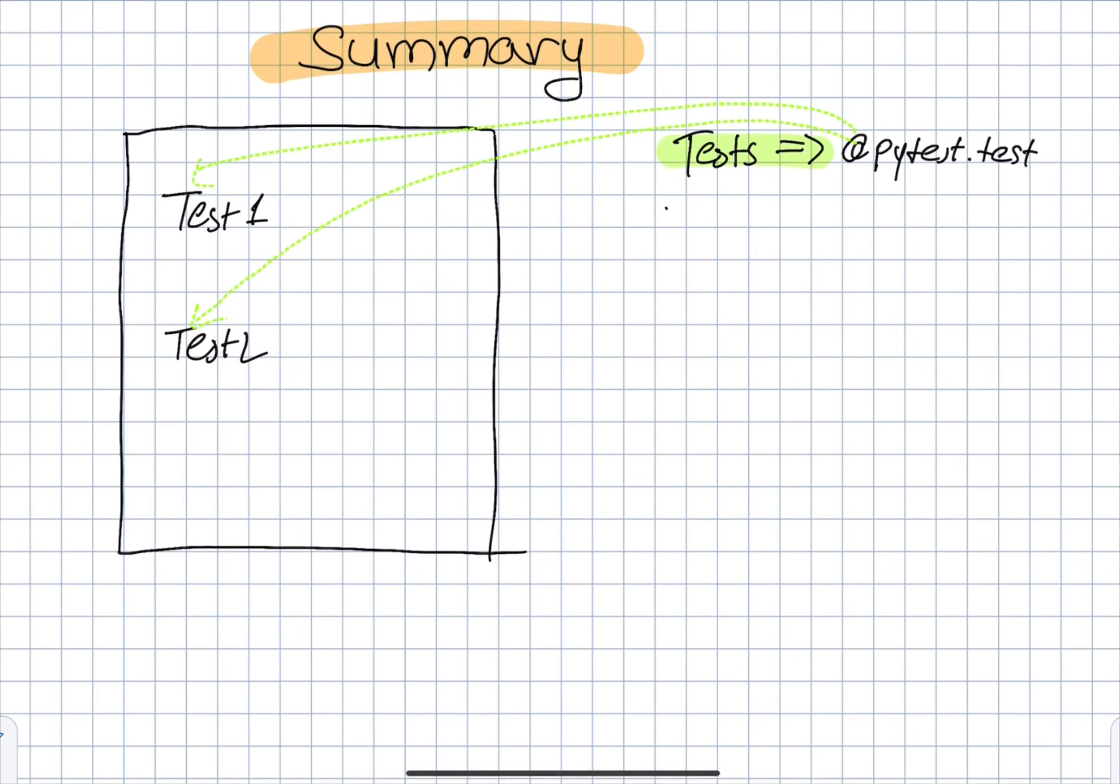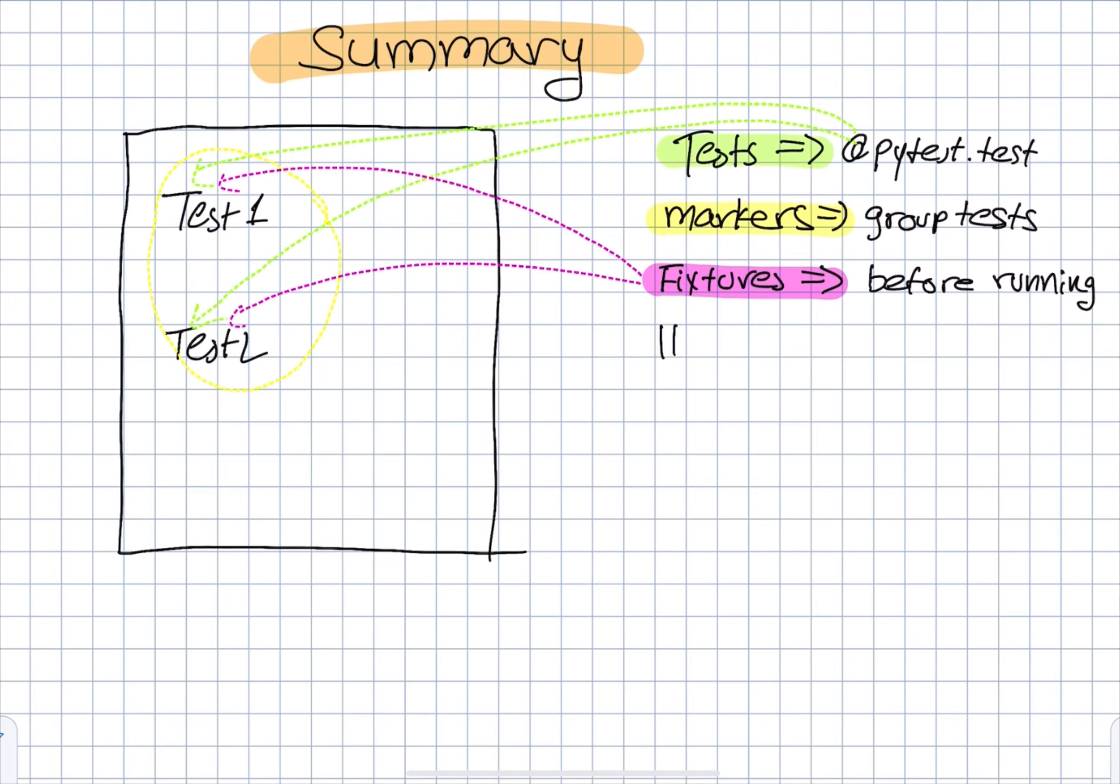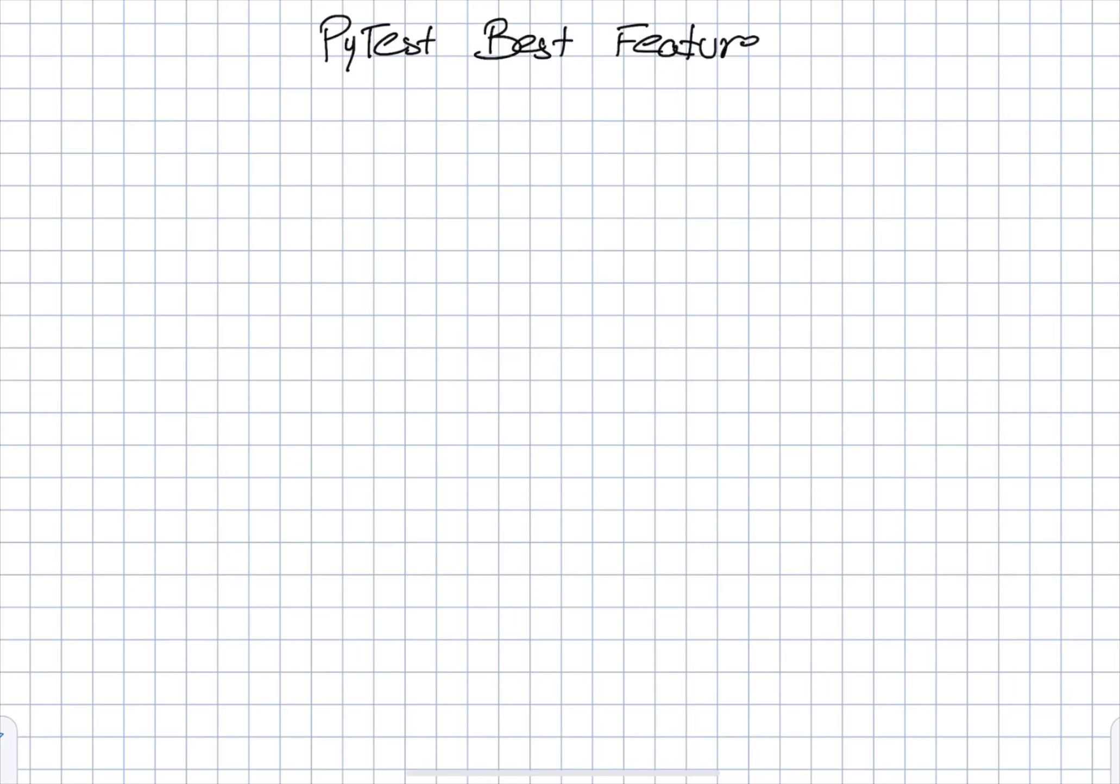Okay, so to summarize everything, we have the test that we use by applying the annotation of pytest.test. Also, we have the markers that we can use to group those tests. Also, we have the fixtures that we can apply before the test is running. And we have the conf test that we can define there, all the hooks that will run pre or post to our test, and we can write to the report or the logger while using those hooks.